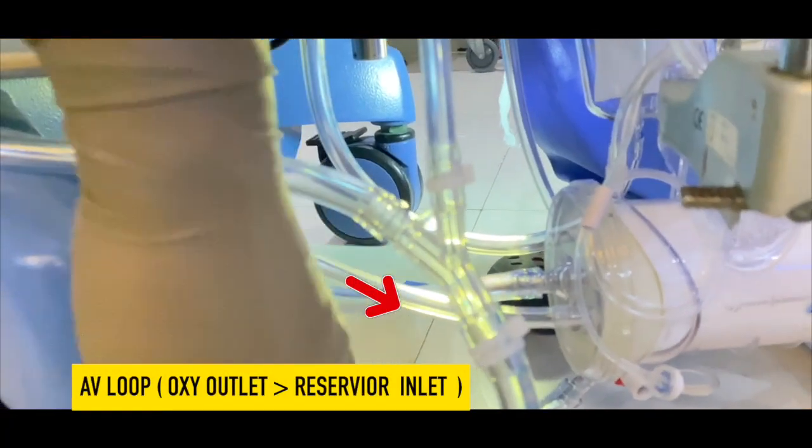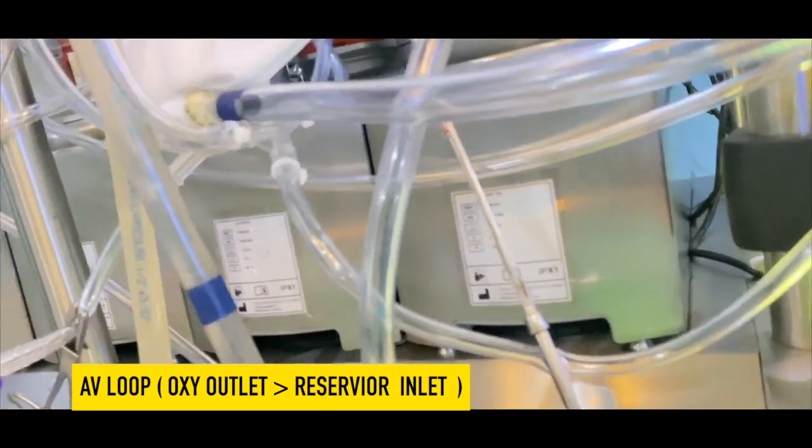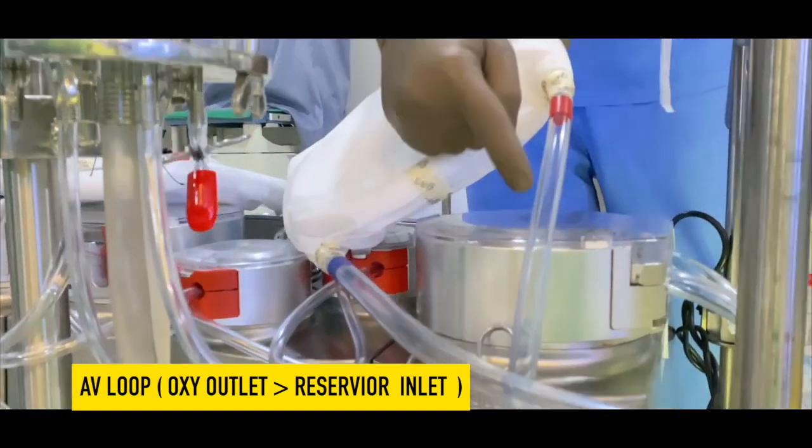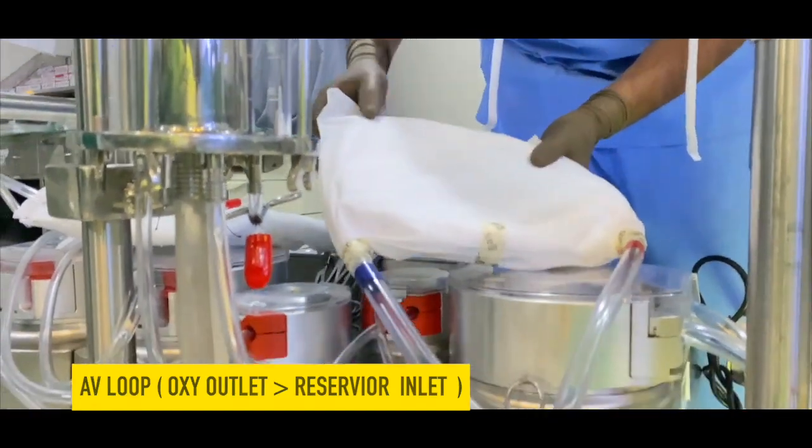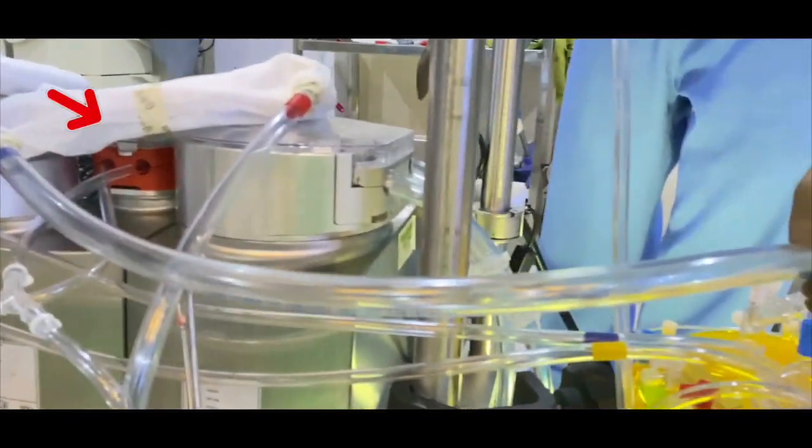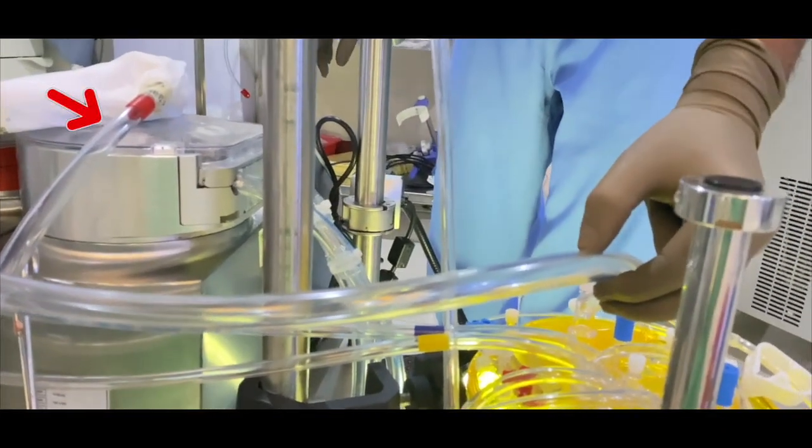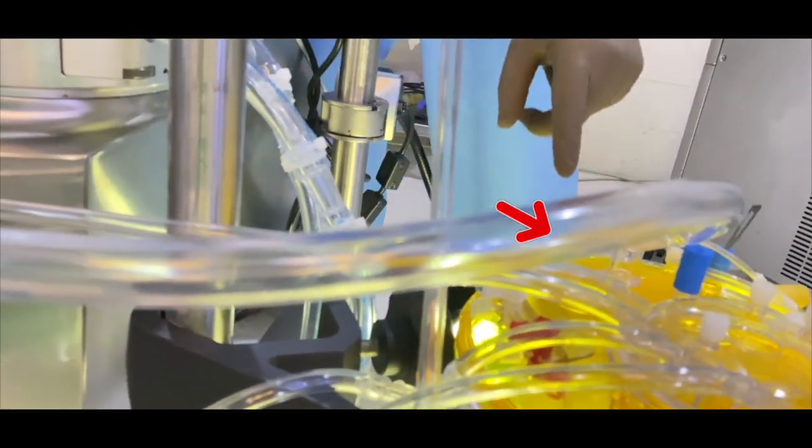EVI loop. This is oxygenator outlet and I have to connect ultraline to that port, and this is EVI loop. Red line tubing is the arterial line and blue line is venous line. I have to connect reservoir inlet.